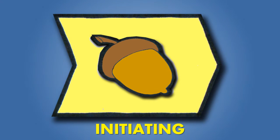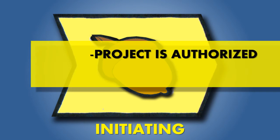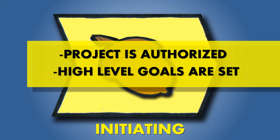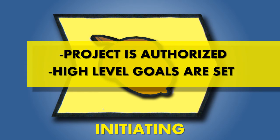The initiating process group is when the project is authorized by the sponsor and senior management. This is also when the project manager is chosen and high-level goals are set by the major stakeholders.